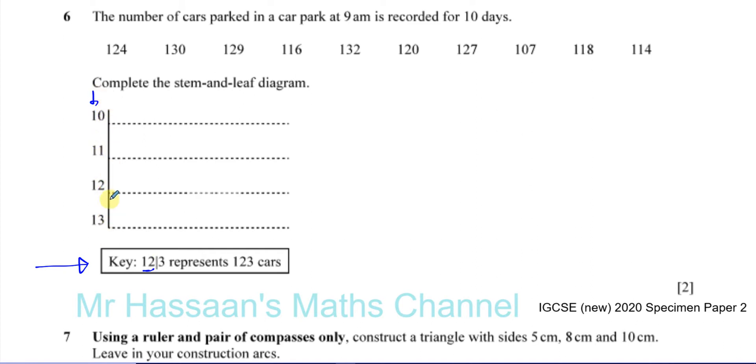This is called the stem, and the leaf is made up of the unit digits, because you have 1, 2, 3. This is the units, this is the tens, and this is the hundreds. So the hundreds and the tens are in this stem, and the leaf should be the units. So for example, 124 belongs in this particular row.